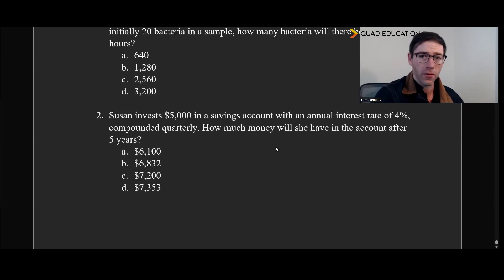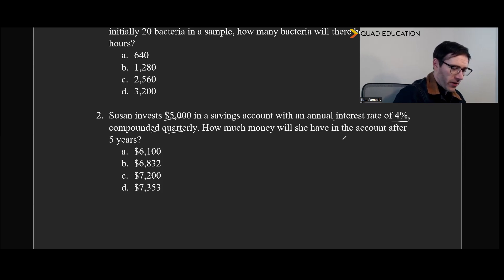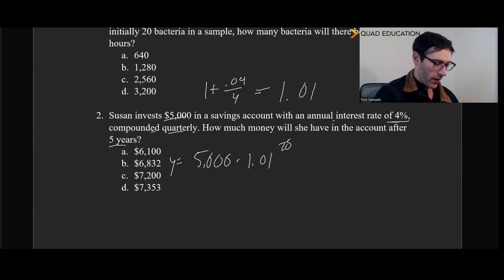All right, let's take a look. So Susan invests $5,000 in a savings account with an annual interest rate of 4% compounded quarterly. How much money will she have in the account after five years? So what we have here is 5,000 is our initial value. Then we have 4% compounded quarterly. So that's going to be 1.04. But that 0.04 right there is going to be divided by four because there's four quarters in a year, which is pretty convenient. That's going to be 1.01 as our rate for every quarter. So that's 5,000 times 1.01. And how many quarters are there in five years? Well, 5 times 4 is 20.